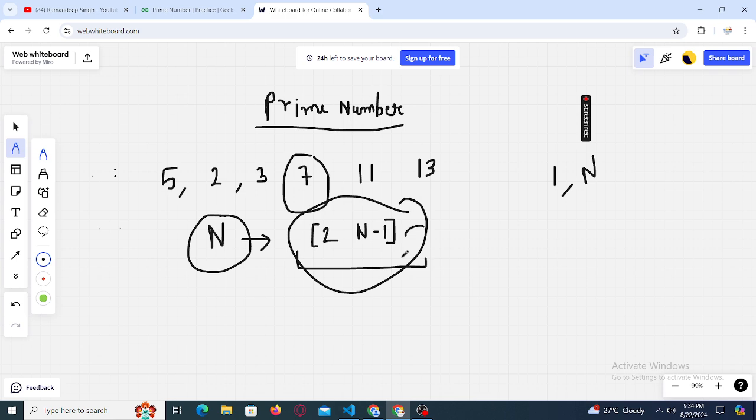That means if any number in this range divides this n, that means this n is not a prime number. Otherwise it's a prime number, because n will not be divisible by any number greater than n. So the range in which we need to check for the divisors of n would be from two to n minus one, and hence all we have to do - the brute force way to solve this problem is start picking up numbers from two up to n minus one.